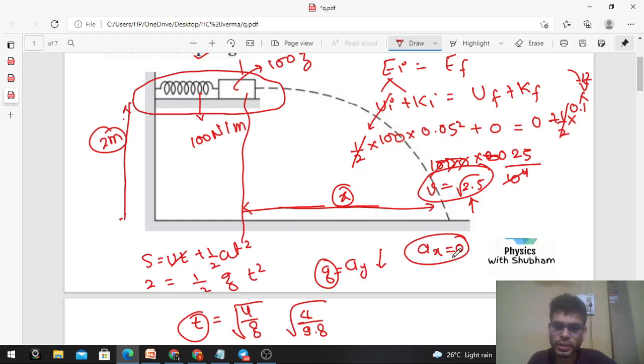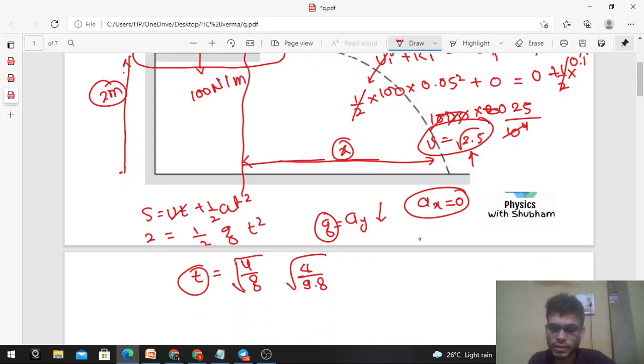Now what will be the horizontal displacement of the block? In the horizontal direction, speed is constant, so simply the distance traveled by the block in the horizontal direction with constant speed in time t equals speed into time: under root 2.5 into under root 4 by 9.8. So the value comes out to 2.5 into 4, that's 10.